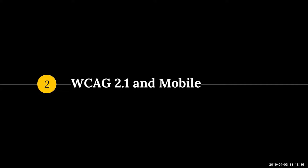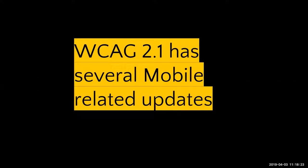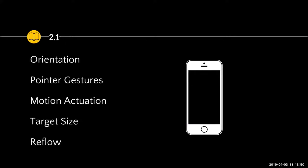Let's talk about the updates to WCAG 2.1 and how they apply to mobile. WCAG 2.1 has had several mobile-related updates, which was awesome to see. I followed the updates very closely — had a couple heartbreak moments with a couple shifts to AAA, which makes sense. There are plenty of standards — I believe it's 12 at the A and AA level — but I'm going to highlight five: orientation, pointer gestures, motion actuation, target size, and reflow.